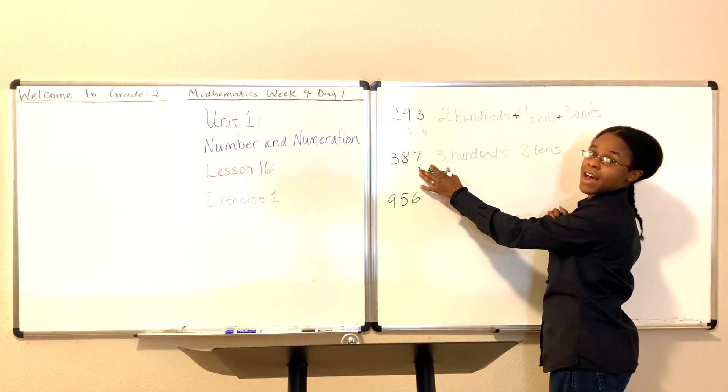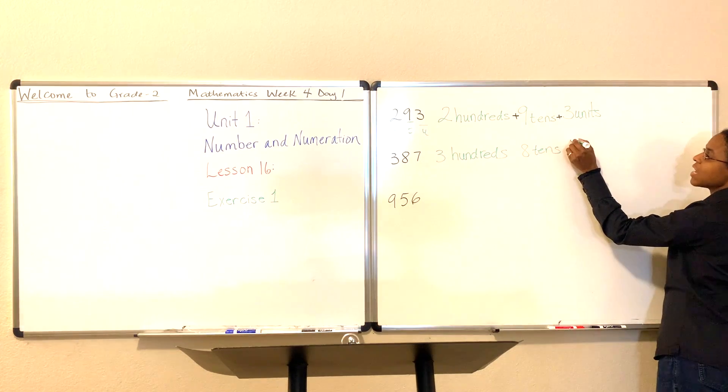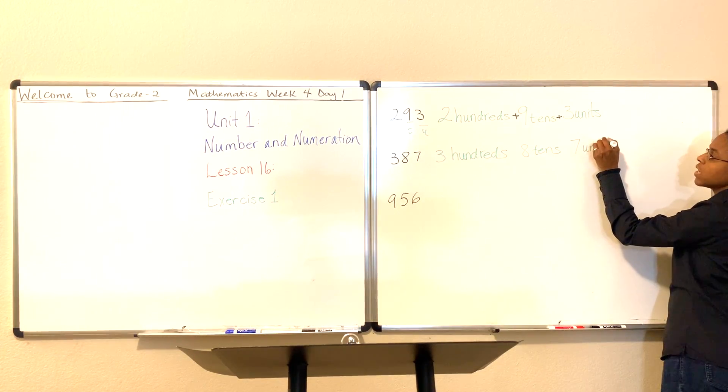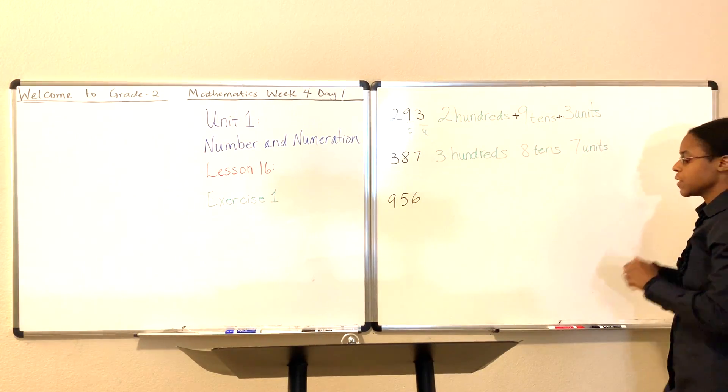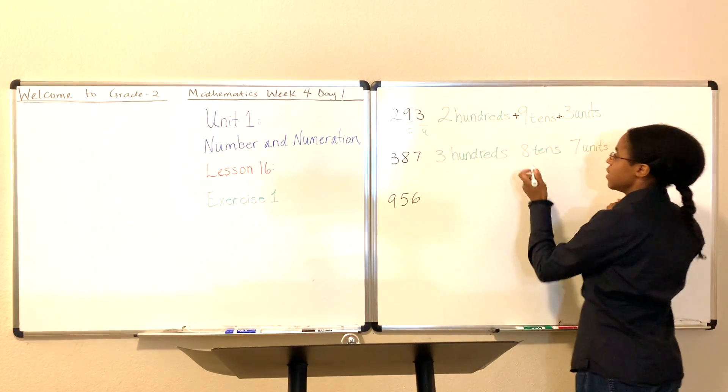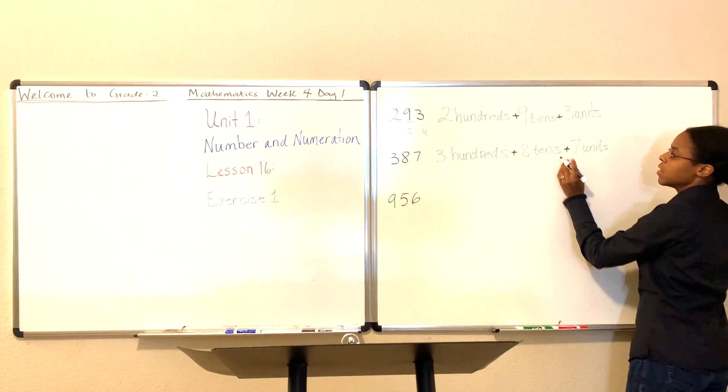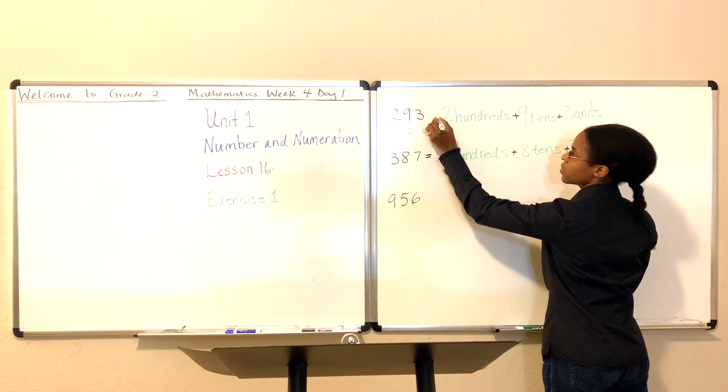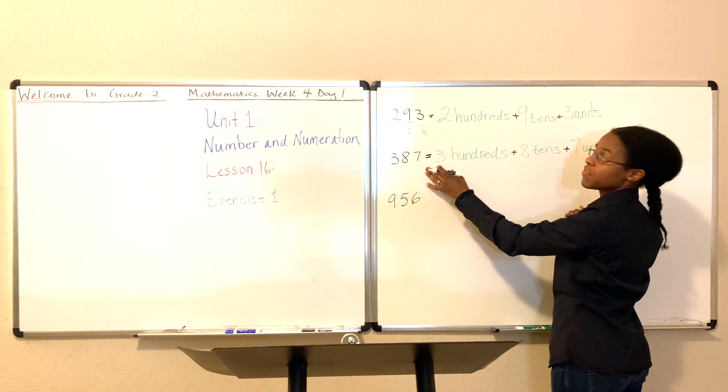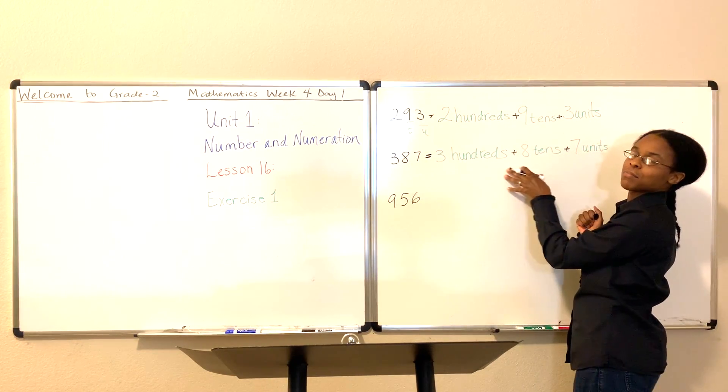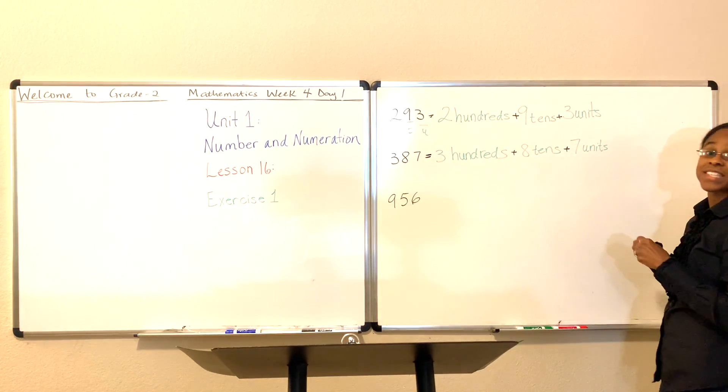And how many units do we have? Units is the final digit. We have seven units. Let's go ahead and put our addition sign here in between these numbers. Three hundreds, eight tens. So this is going to be equal to 387 is equal to three hundreds plus eight tens plus seven units.